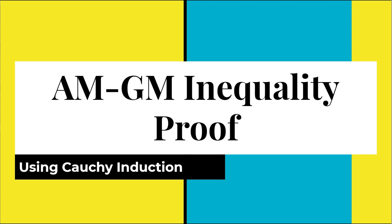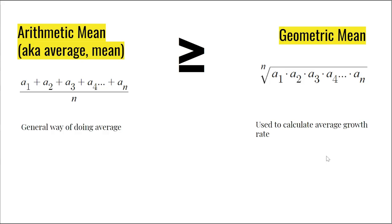This proof is the only one I know that doesn't have any calculus. First of all, what even are AM and GM? AM means arithmetic mean, which is the sum of all the numbers divided by the number of numbers. And GM means the geometric mean, which is the nth root of the product of all the numbers. The inequality states that the arithmetic mean is always greater than or equal to the geometric mean, if all the numbers are positive.